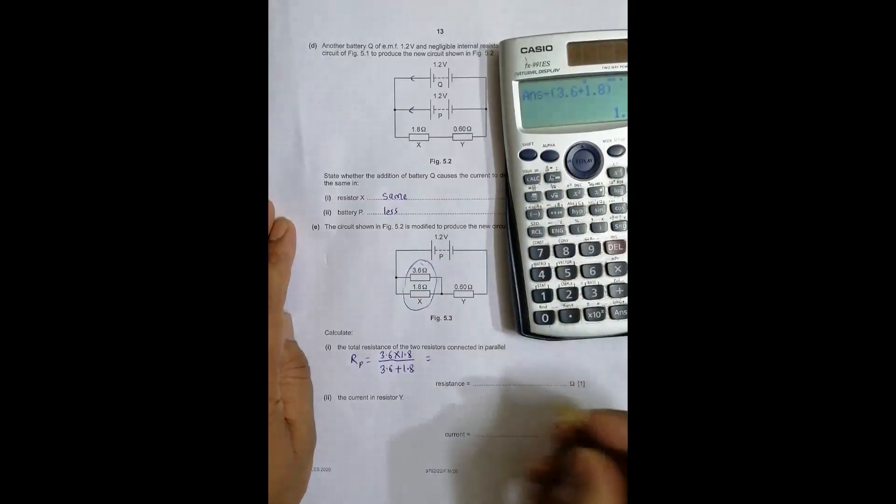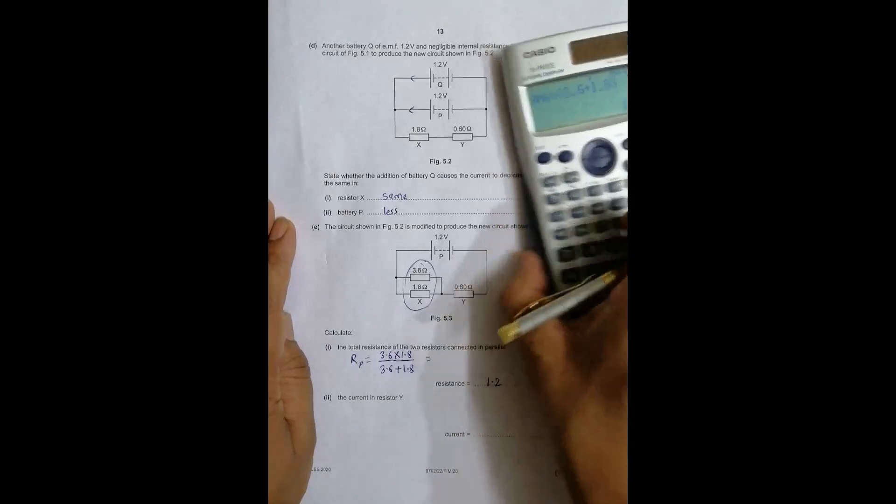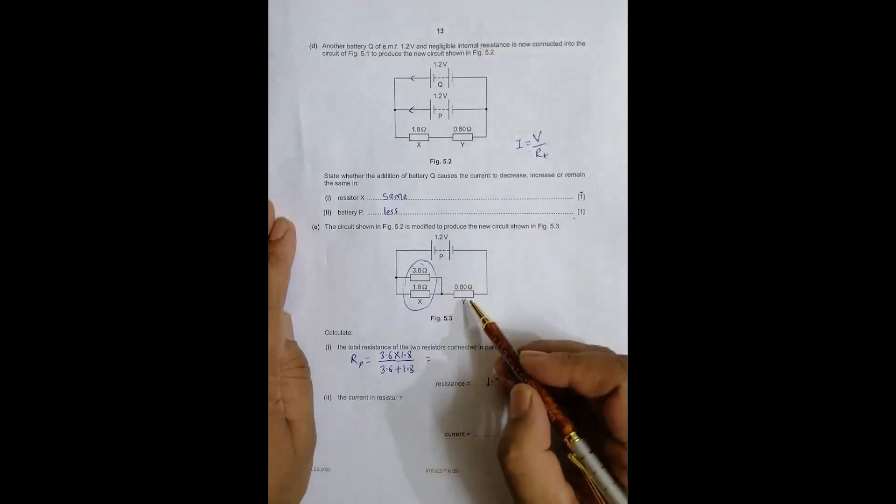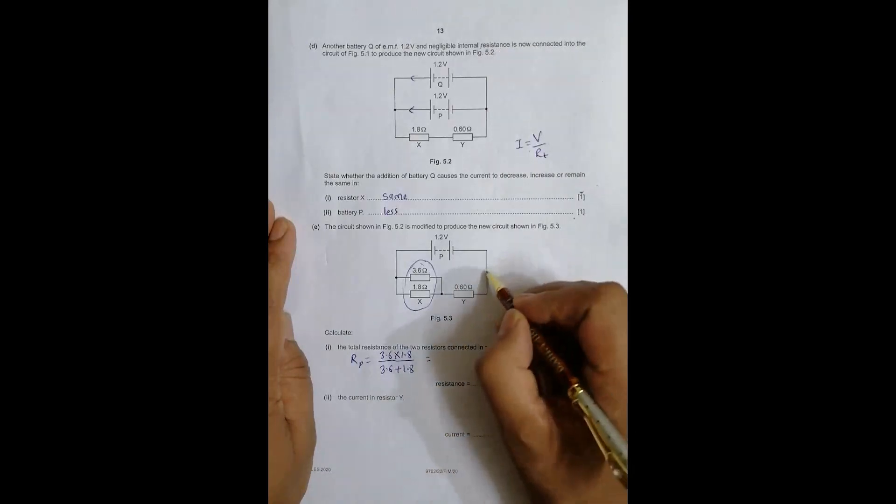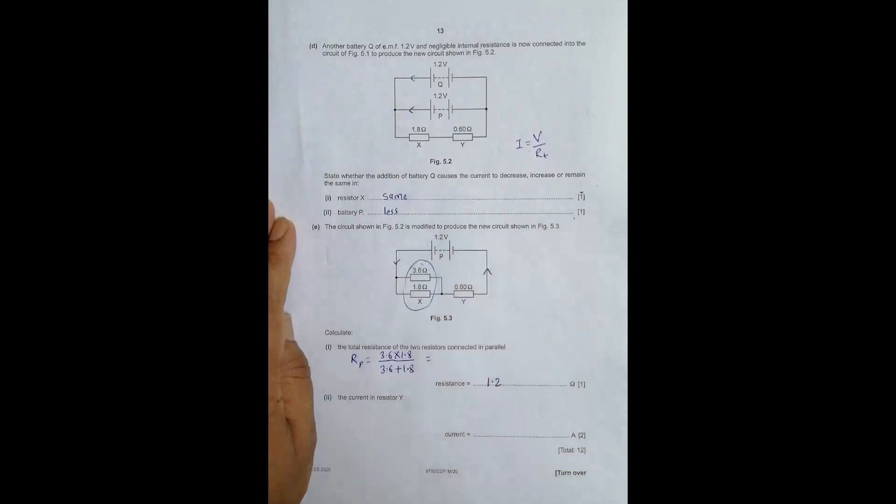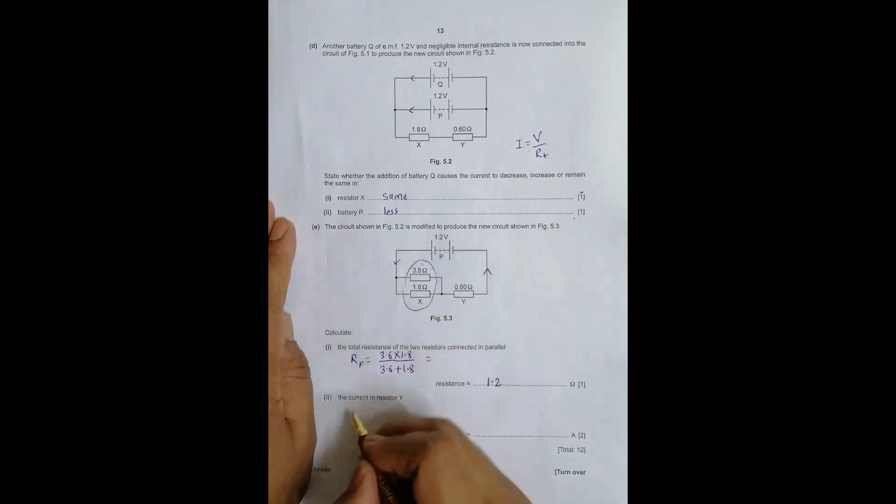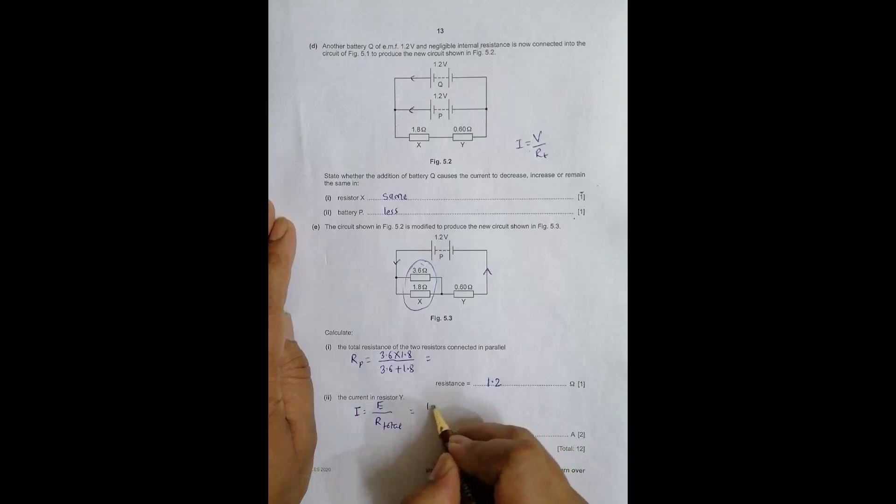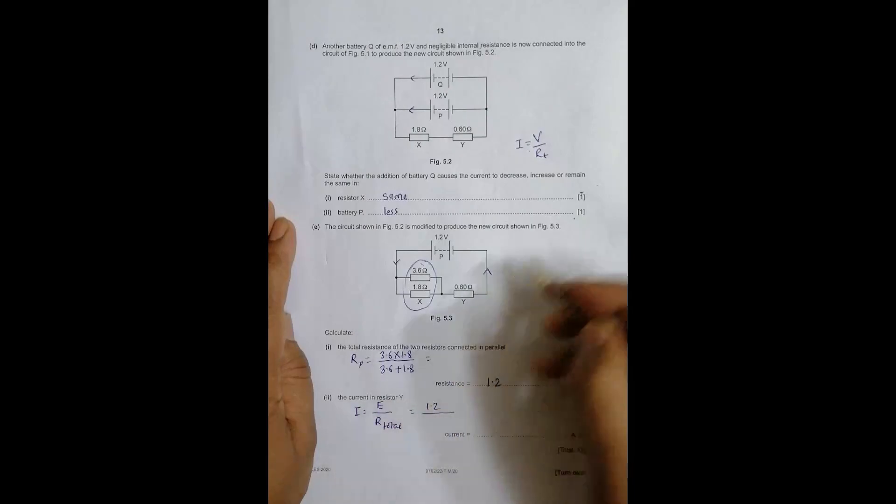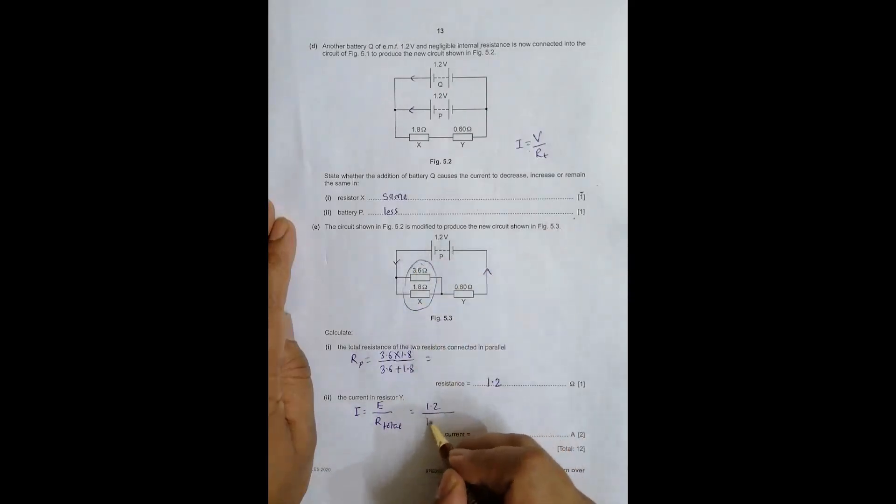The current in Y is the current through the circuit; it divides at the parallel section but otherwise everywhere it should be the same. So I = total EMF divided by R total. The total EMF is 1.2 volts and R total = 1.2 + 0.6 = 1.8 ohm.